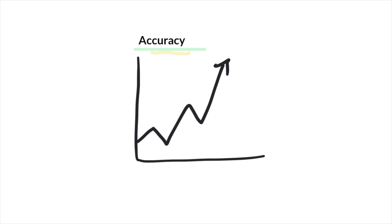If our data is accurate, that means that whatever we're marking down is a representation of what's actually occurring. So talking about accuracy, we want to think of the term 'true value.' When something is accurate, it means that the true value exists in the data, so we can compare measures to the true value.